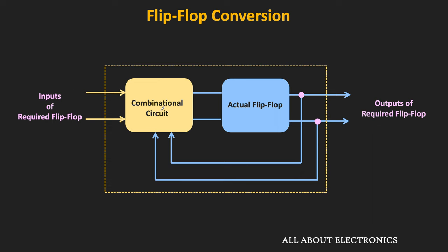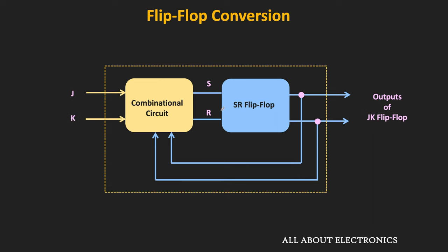For example, let's say we have an SR flip-flop and we want to convert it into the JK flip-flop — that means our required flip-flop is the JK flip-flop. As you can see, the J and K inputs as well as the output of the SR flip-flop are given to this combinational circuit. And the output of this combinational circuit is given as input to this SR flip-flop. So if this combinational circuit is designed properly, then the output of this SR flip-flop will now behave as the output of the JK flip-flop — in other words, this circuit will work as the JK flip-flop. In this way, we can convert one type of flip-flop into another.